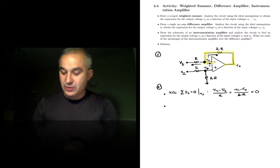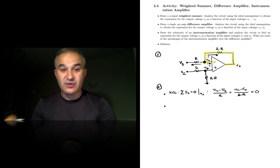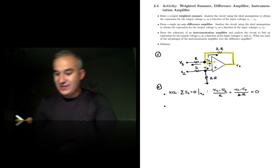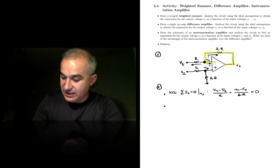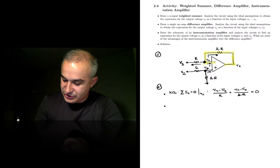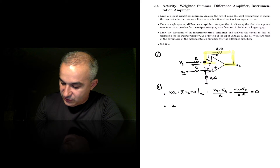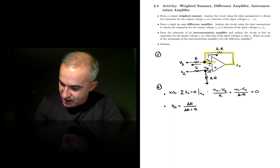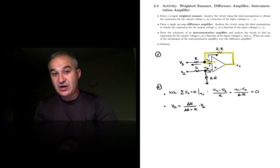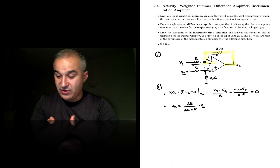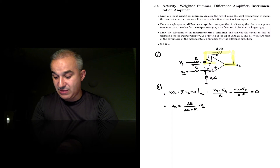Step two: you do the same at the other node — apply KCL and analyze it. In this case we don't have to, because we can see clearly that this is a voltage divider, since the op-amp does not draw any current under ideal conditions. So we can say Vp is equal to AR over (AR plus R) times V2. But in general, if it were more complex, you would just apply another KCL analysis at this node, and you would come up with this same expression.